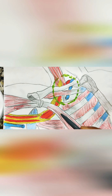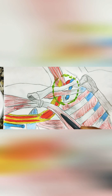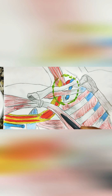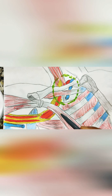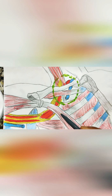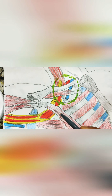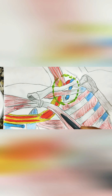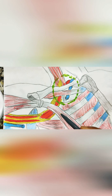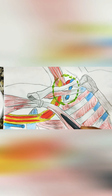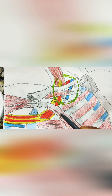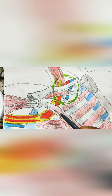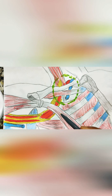The middle scalene muscle arises from the transverse processes of C2 to C7 and inserts broadly onto the posterior aspect of the first rib - it forms the posterior wall of the triangle. The superior border of the first rib forms the base of the scalene triangle. So the anterior scalene forms the anterior wall, the middle scalene forms the posterior wall, and the superior border of the first rib forms the base.